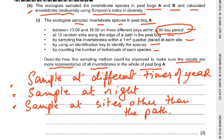Think about how you are going to make the results more representative of all the invertebrates in the whole of peat bog A. Sampling only along the path would not be representative of the whole peat bog.